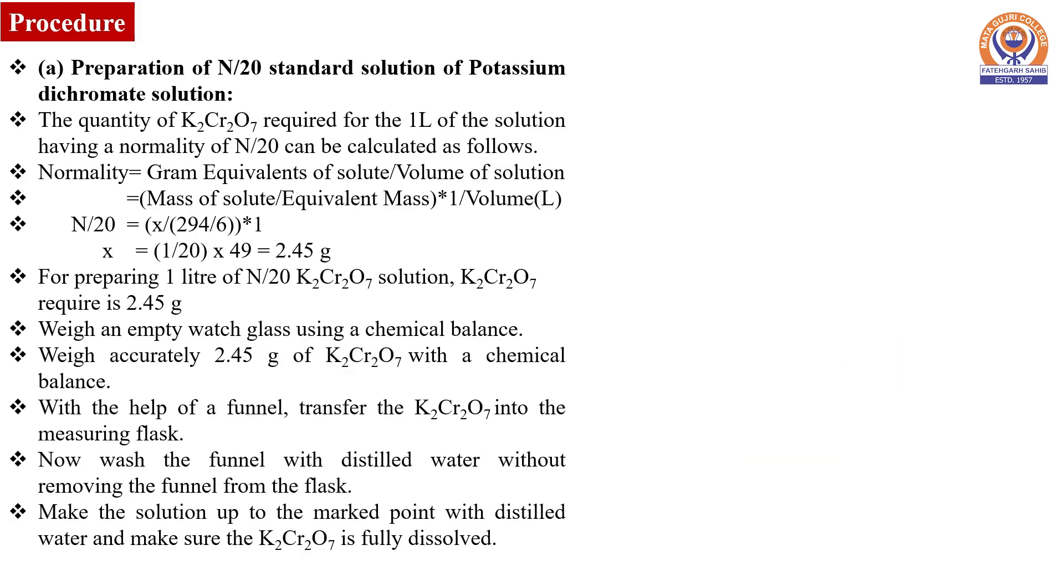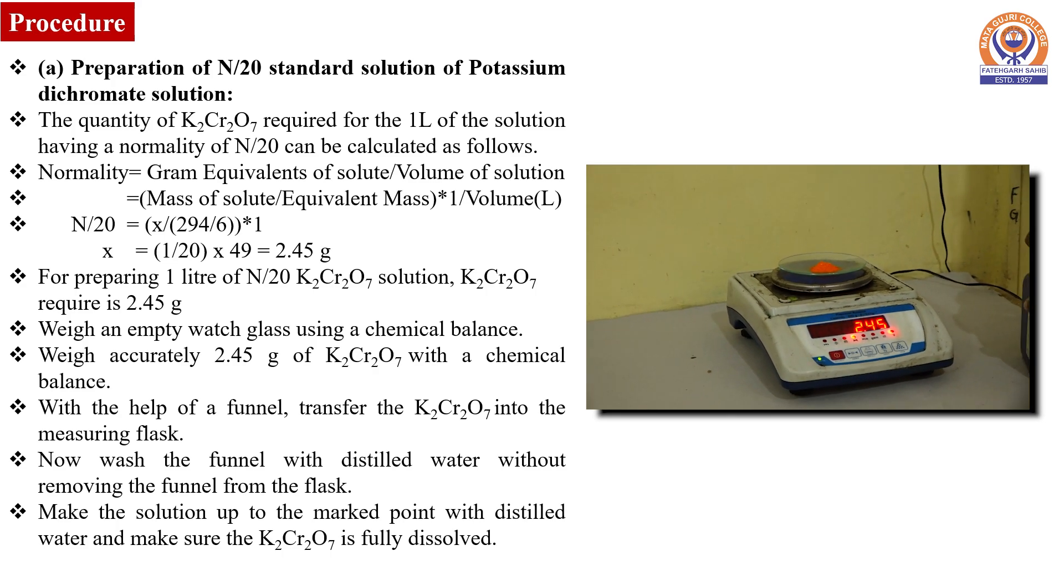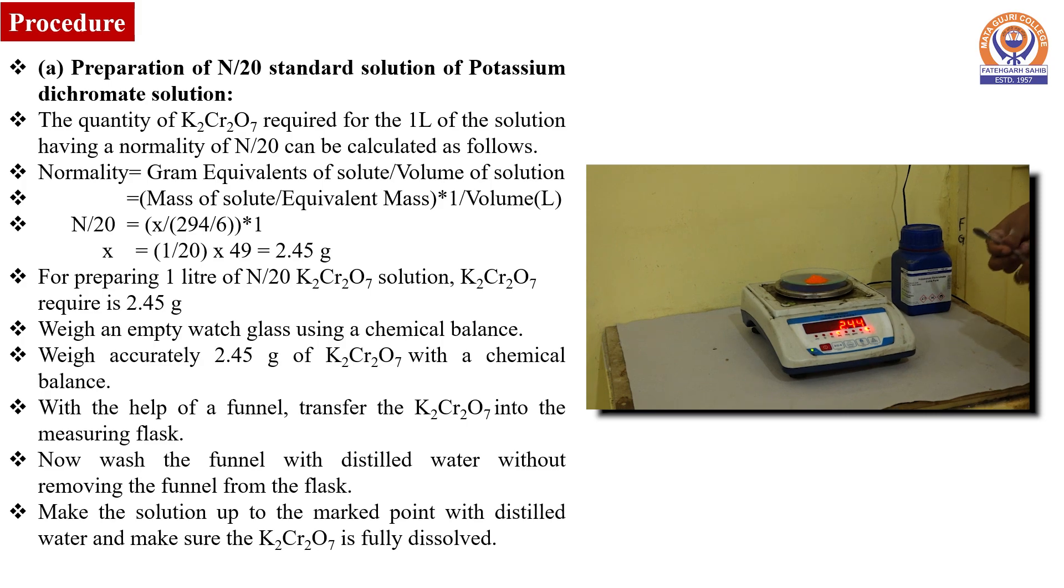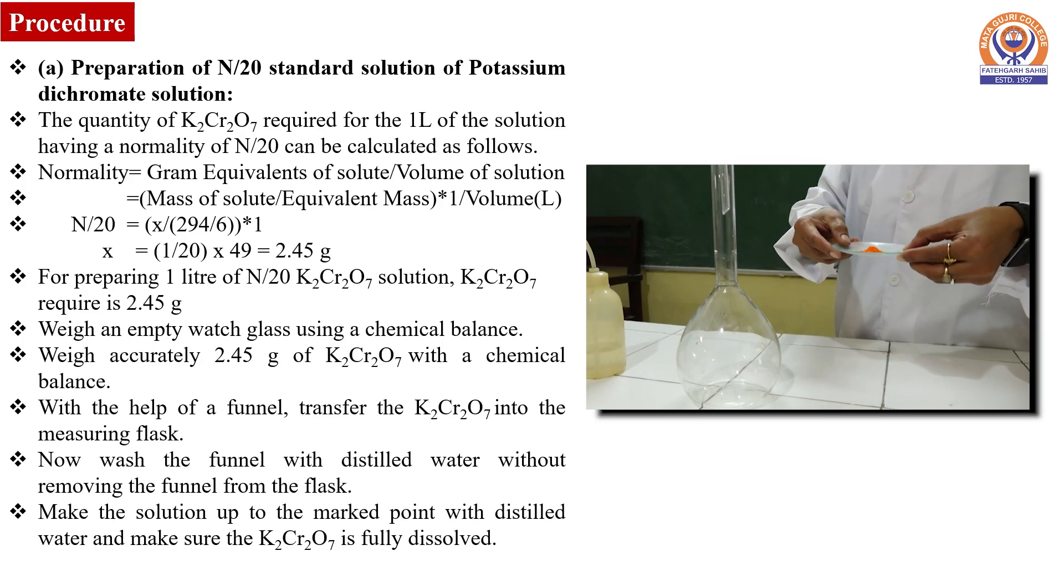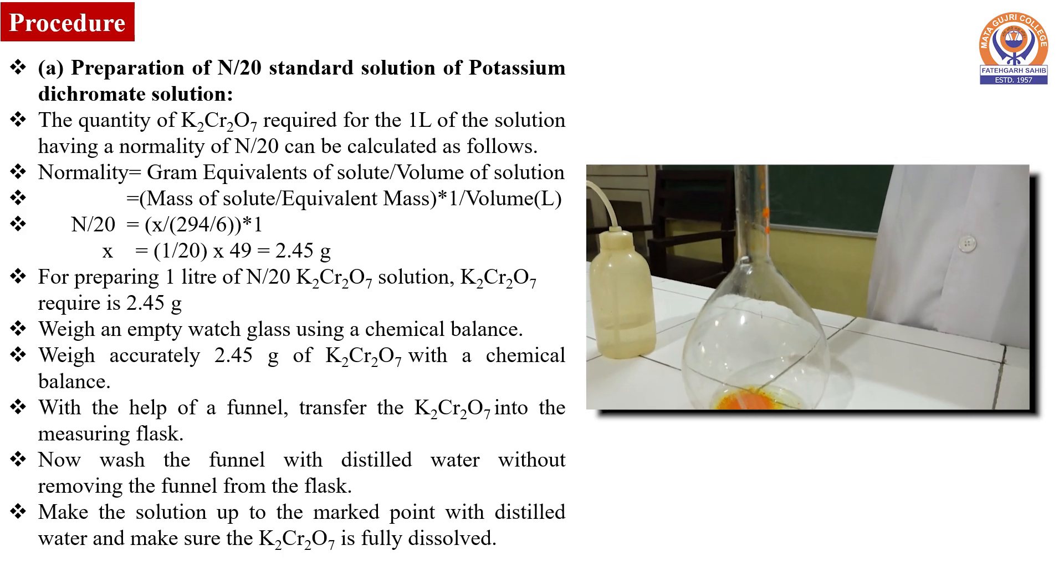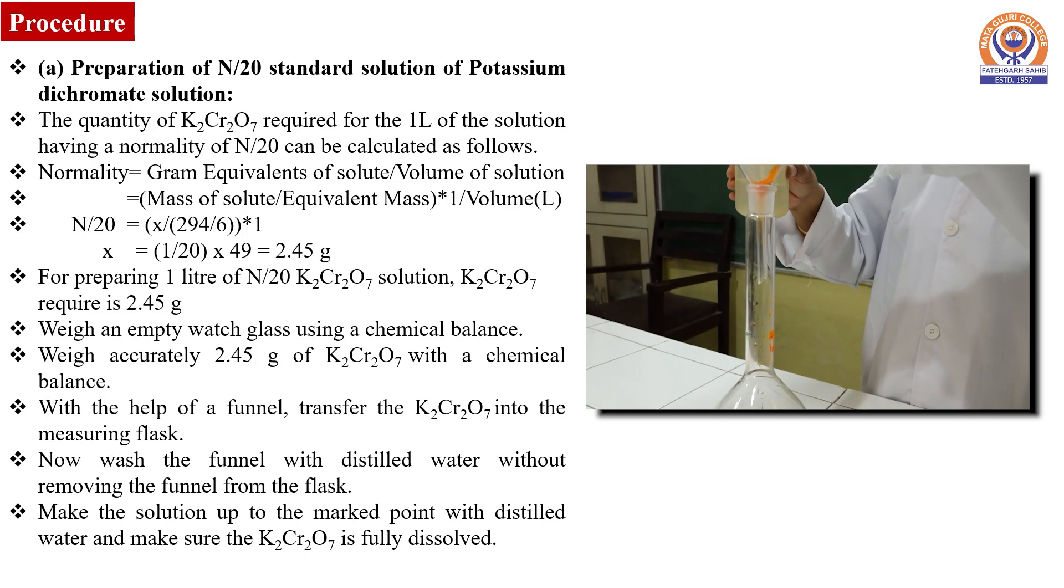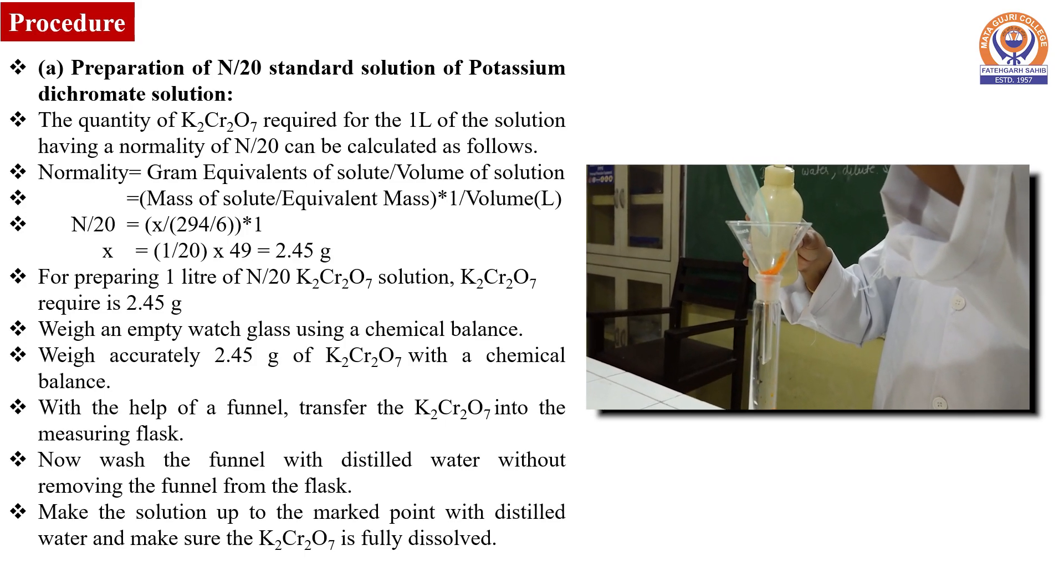Now the procedure. First of all, we will be preparing the standard solution of N/20 potassium dichromate. This solution is prepared by weighing accurately 2.45 grams of potassium dichromate on a weighing balance. The weighed potassium dichromate is dissolved in distilled water and transferred into a measuring flask of one liter capacity with the help of a funnel.